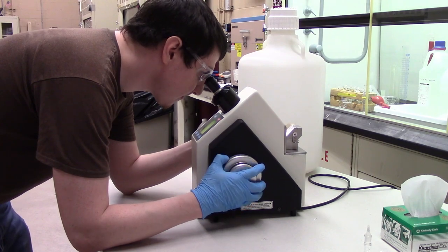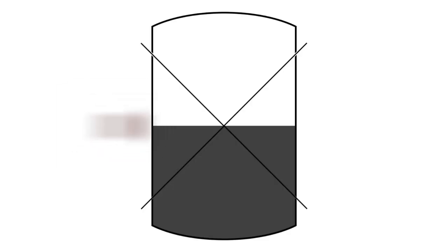Using the larger wheel for fine-tuning, line the border up with the crosshairs. If the image is blurry, you can twist the microscope lens to adjust the focus.